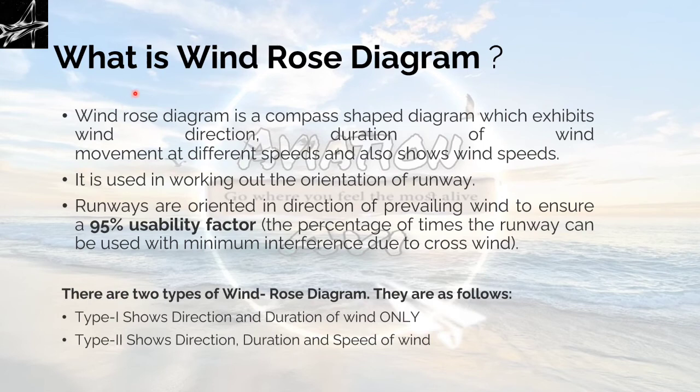What is a wind rose diagram? A wind rose diagram is a compass-shaped diagram which exhibits wind direction, duration of wind movement at different speeds, and also shows wind speed. It is used in working out the orientation of runways. Runways are oriented in the direction of prevailing wind to ensure a 95% usability factor, the percentage of time the runway can be used with minimum interference due to crosswind. There are two types of wind rose diagram.